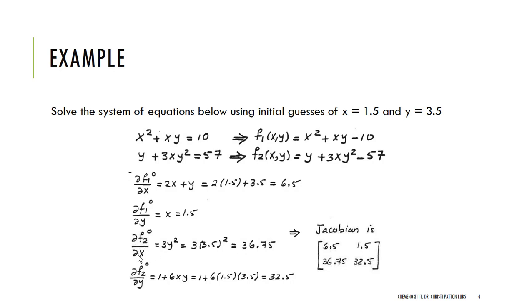The derivative of f2 with respect to x is 3y squared. And that number, the value is 36.75 at my starting guess. And the derivative with respect to y is 1 plus 6xy. And when I substitute that in, I get 32.5.